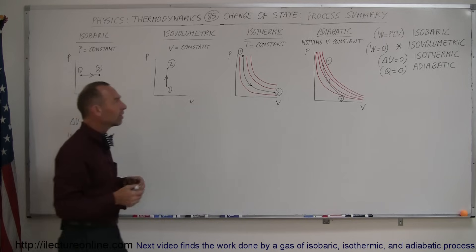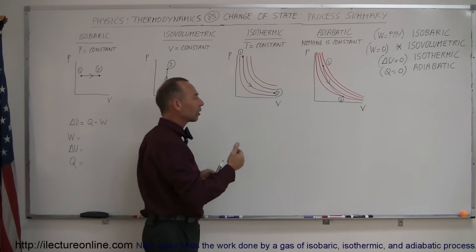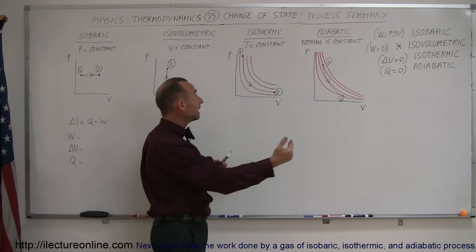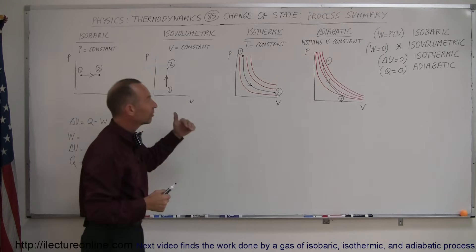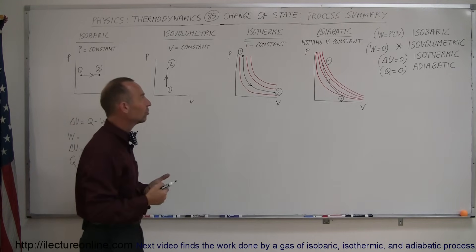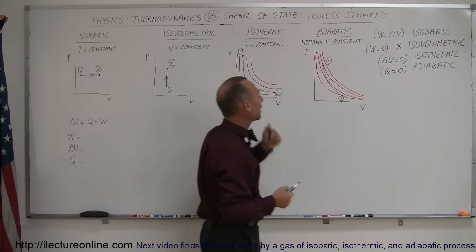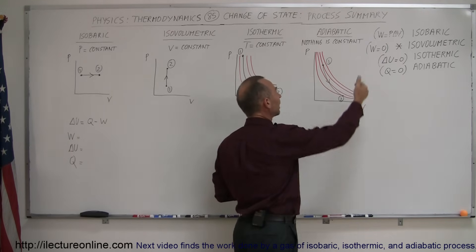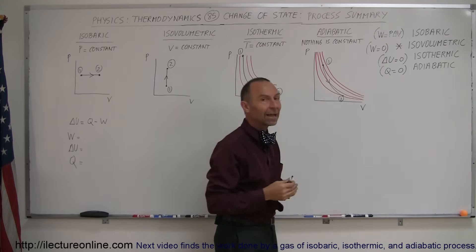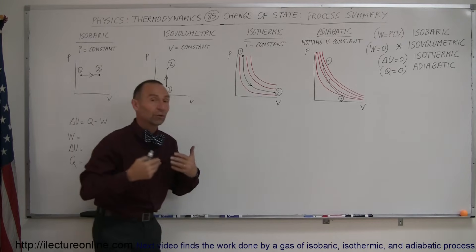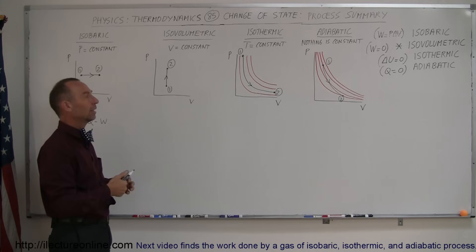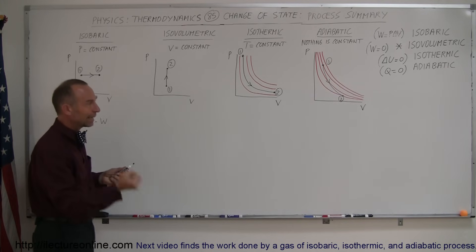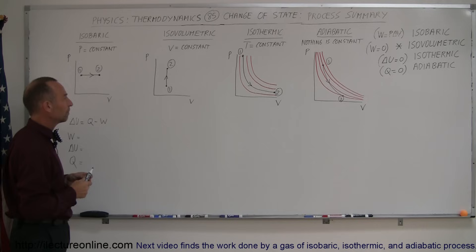In an isothermic process, the amount of work done by the gas equals the amount of heat it receives such that the internal energy doesn't change, so it simply follows an isotherm and the temperature does not change. In an adiabatic process, it happens so quickly that no energy is received from the outside, so expansion can only occur by receiving energy from within itself — all the work done is accomplished by taking energy from the internal energy of the gas.